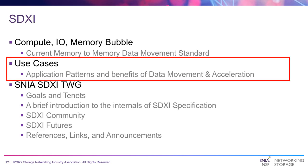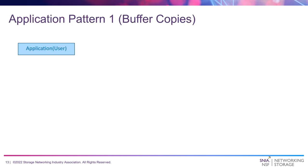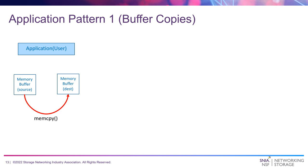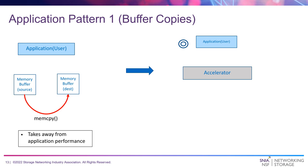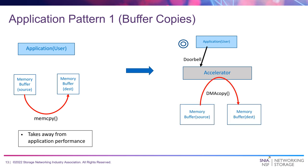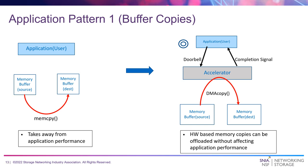What are the use cases that can benefit from an architected accelerated data movement? Here's one example: an application trying to perform a memory copy from one buffer to another is typically done using a software-based memory copy, which takes away from application performance. We can accelerate this with an accelerator by allowing an application to instruct a work item in the form of a descriptor and telling the accelerator to go pick it up using a doorbell. The accelerator performs the data copy while the application is free to do other things. Once the copy is done, it signals the application — this is how we offload the memory copy.